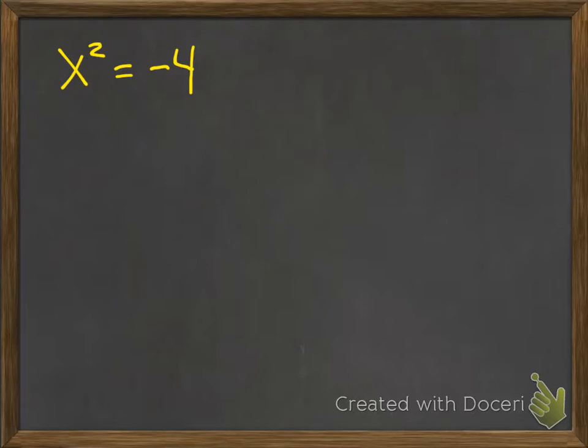Last example: what if x squared equals negative 4? If you take the square root of a negative number in your calculator, it will say no real solution. Anytime you see this, write no real solution.